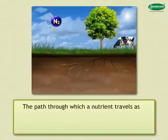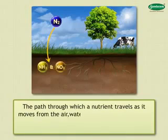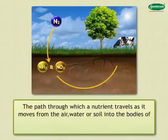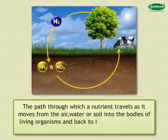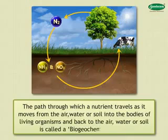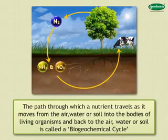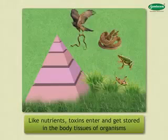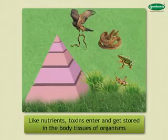The path through which a nutrient travels as it moves from the air, water, or soil into the bodies of living organisms and back to the air, water, or soil is called a biogeochemical cycle. Similar to nutrients, even toxins enter the bodies of organisms, get stored in their body tissues, and get transferred to higher trophic levels.